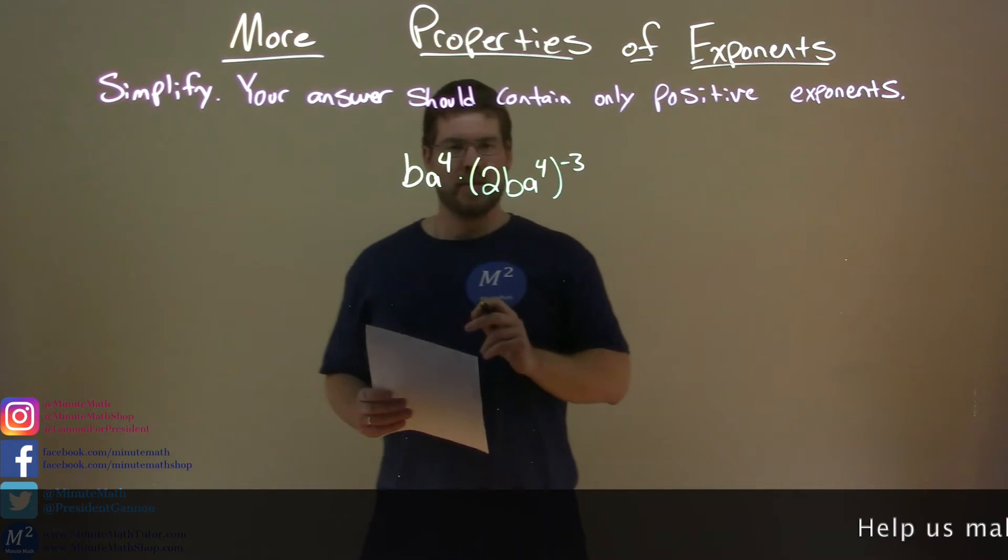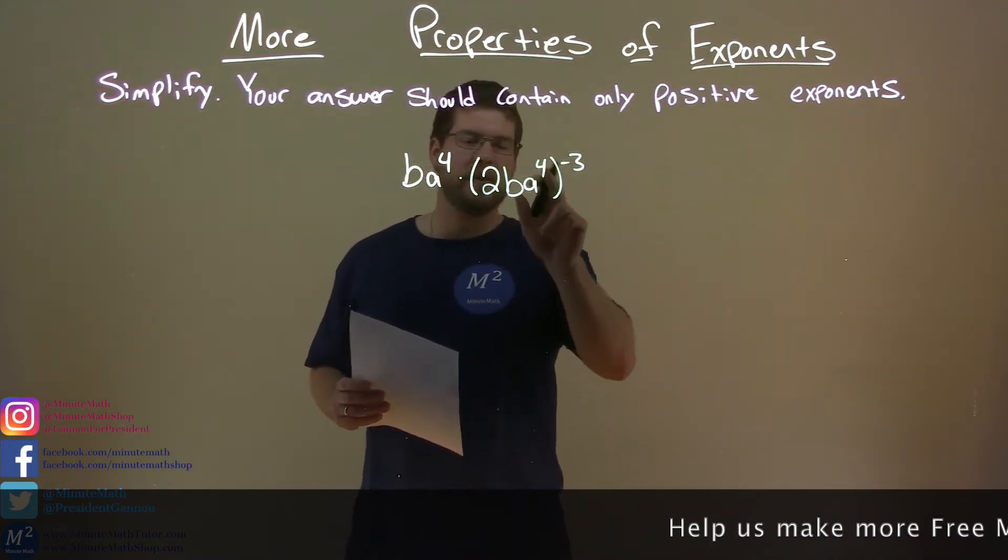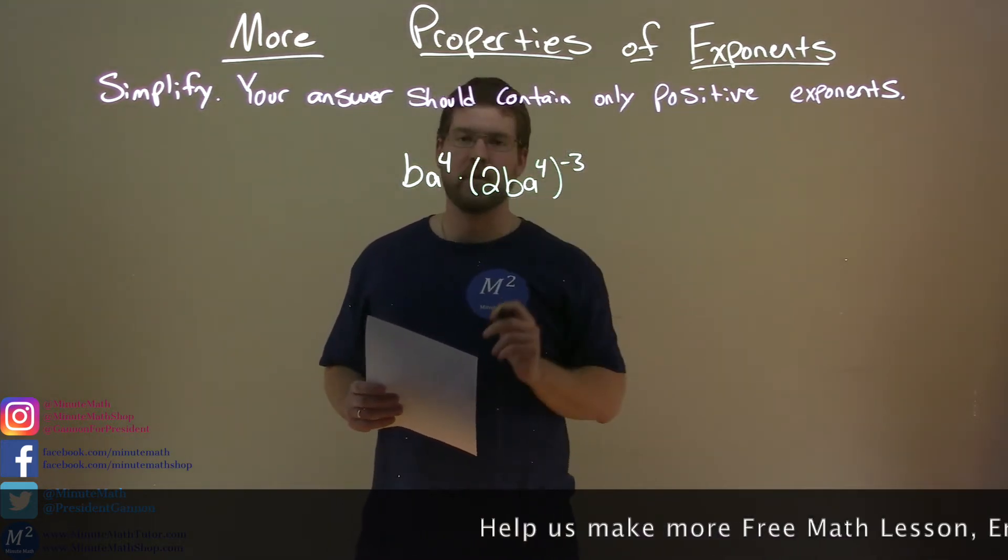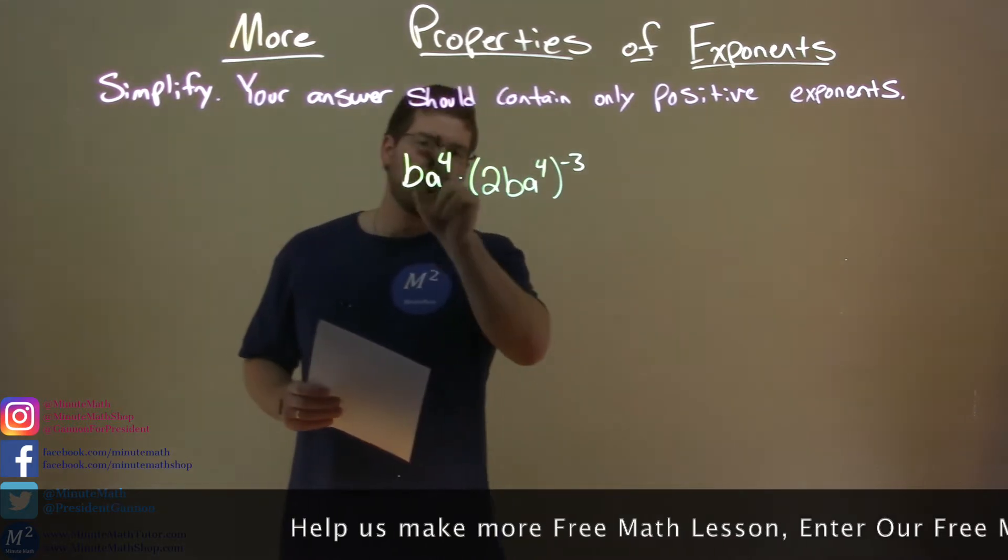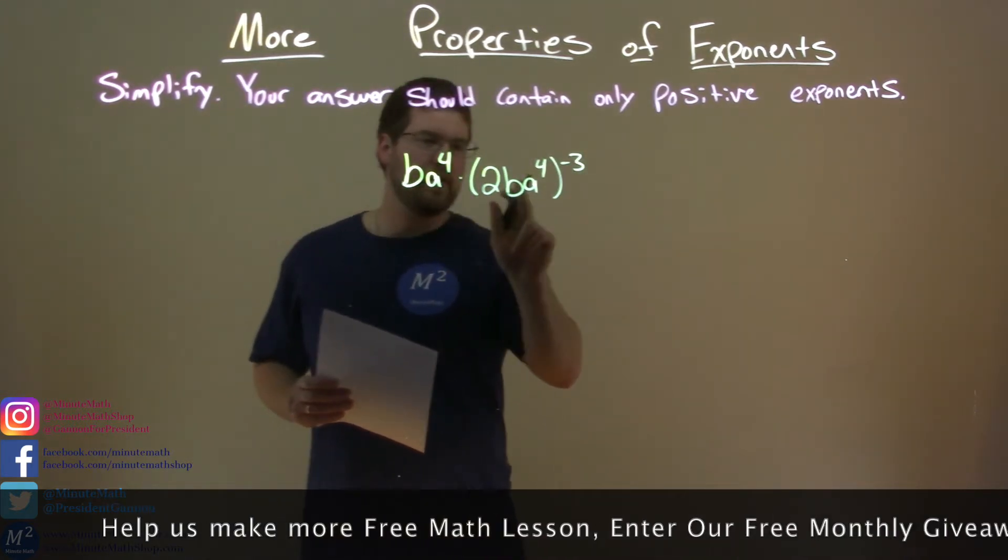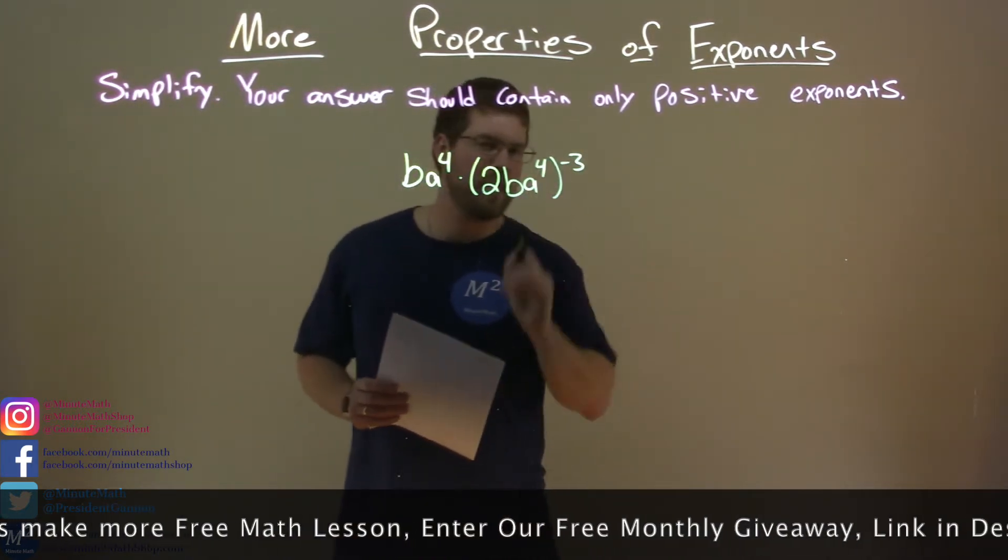BA to the fourth power times 2BA to the fourth, all to the third power. Notice we have this thing here, BA to the fourth, and I see a BA to the fourth. This will be important later.